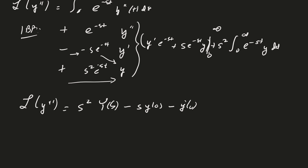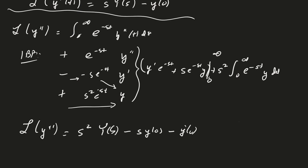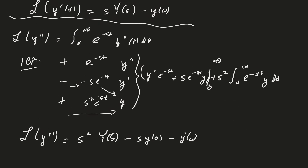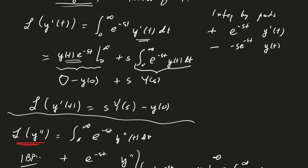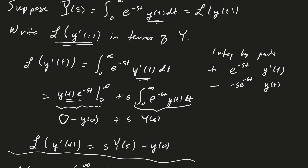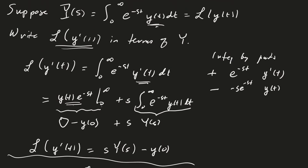In the last video we were talking about taking the Laplace transform of the derivative, and I kind of rushed through that last one. So let's be sure we understand this computation for the second derivative. The idea here is to write the Laplace transform of y double prime in terms of the Laplace transform of the original function, just like we did before.